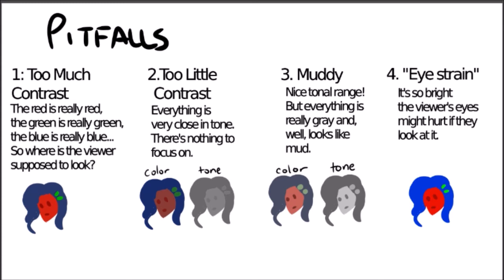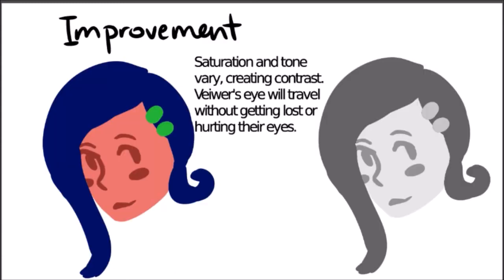So how do you avoid this? Well, you think about what color you want to pop out. In this scenario, I would want the hair to come out more than anything, so I would make the blue brighter here and make the red softer so that the eye travels there.